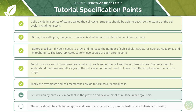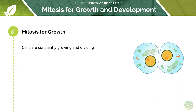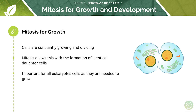Why is cell division by mitosis so important? The key reason is growth. We all started off as one single fertilised egg cell but are now made up of millions and millions of cells — that's through cell division by mitosis. Even now, our cells are constantly growing and dividing, and mitosis allows this to happen through the formation of identical daughter cells. This is fundamental to all eukaryotic cells.